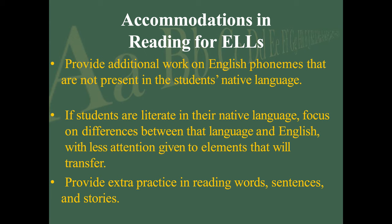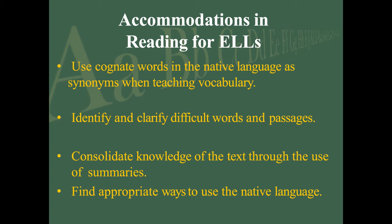Provide extra practice in reading words, sentences, and stories. Use cognates in their native language — cognates are words you can trace back to a similar root, like a Latin root. For instance, 'music' in English is 'música' in Spanish; 'television' is 'televisión.' Cognates are very important because they are a link between language one and language two — easy ways to start understanding what a word means. Think of it like spelling for meaning, doing morphological analysis — you're looking at commonalities between English and the other language. Make sure you identify and clarify difficult words and passages, and pre-read things you plan to assign to ensure there are no sentence structures that would give them a lot of trouble.